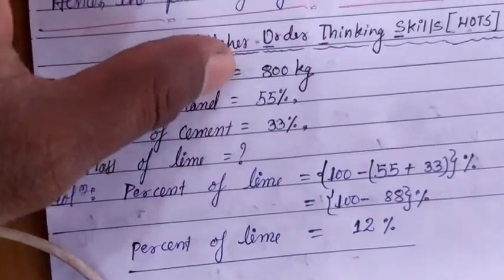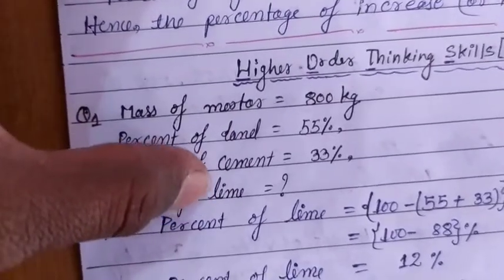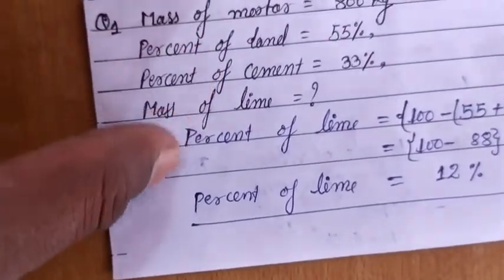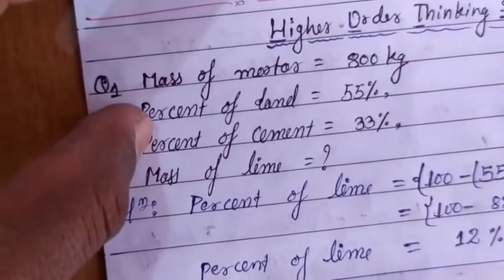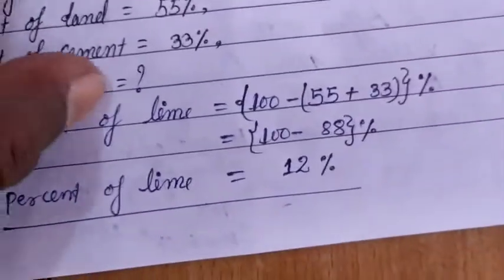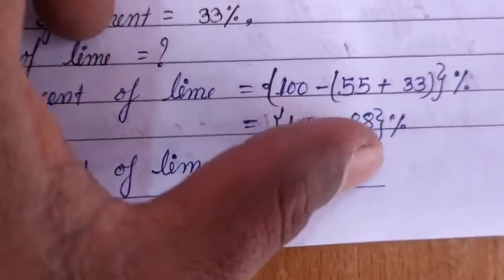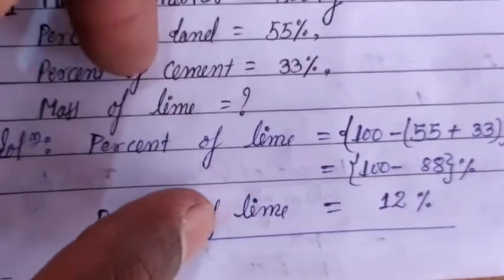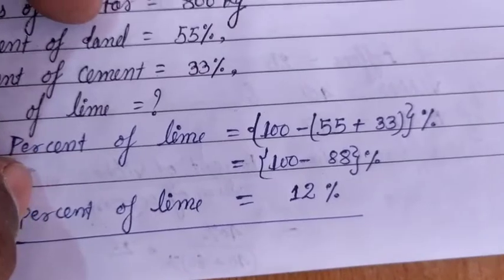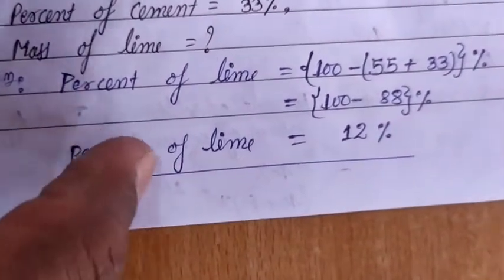Mass of mortar is 800 kg. Percent of sand is 55%, percent of cement is 33%, and mass of lime is not given — neither the percent of lime nor the mass of sand or cement directly. First of all, we have to find the percent of lime. Percent of lime is evaluated by subtracting: 100 minus (55 plus 33), because collectively any substance is 100% by the addition of all its constituent components.